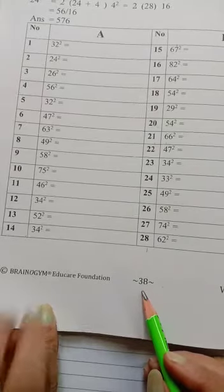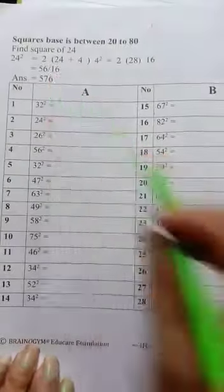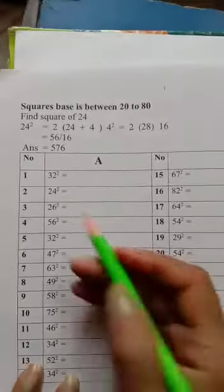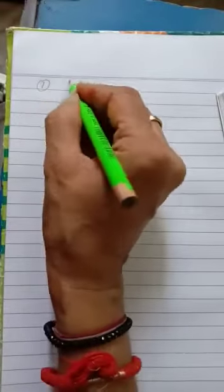Today we have to do page number 38. This is on squares. So we have to start now with question number 1: square of 32. We have to write down square of 32.